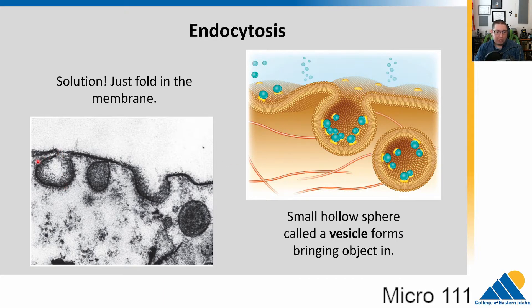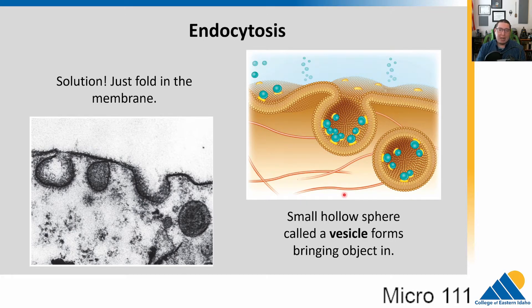Here's an electron micrograph of it actually happening. This is a cell membrane — it's budding and bringing things in as vesicles. So this is how you get big things in. Let's go ahead and watch an animation of this.